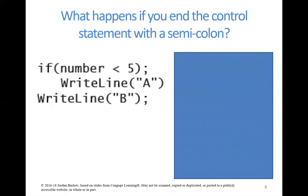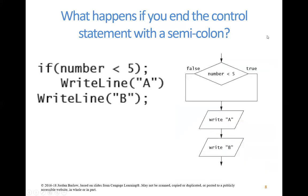A common mistake students make is putting a semicolon after their control statement. Think about what happens: the if statement evaluates whether the number is less than 5, and if it is, it does whatever follows until it reaches a semicolon. So this erroneous code effectively says 'if number is less than 5, do nothing, then continue on.' No matter what the number is, it will write A and then write B. So don't put a semicolon after your control statement.